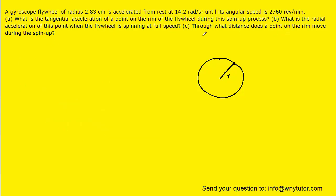Now for part B, we are asked to calculate the radial acceleration of that same point when the flywheel is spinning at full speed. Spinning at full speed simply means that it's now rotating at 2760 revolutions per minute.